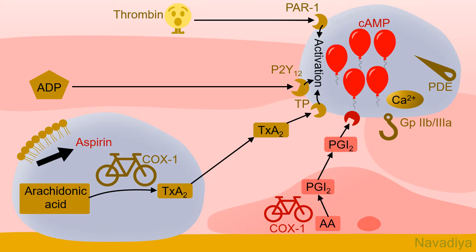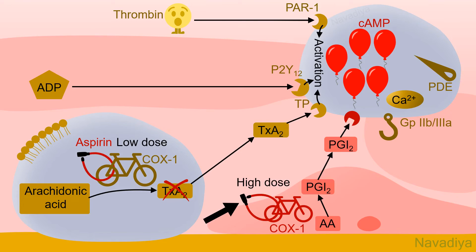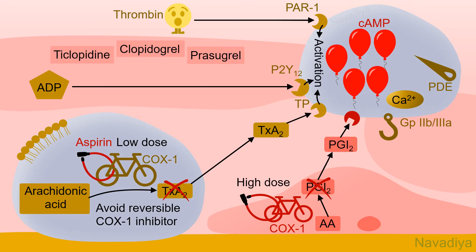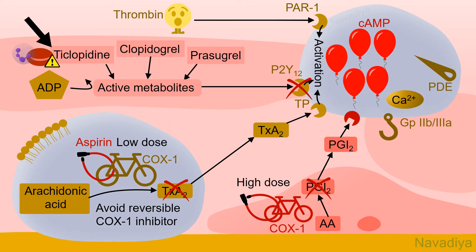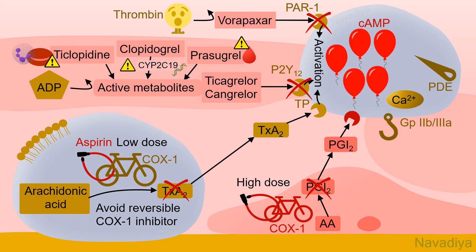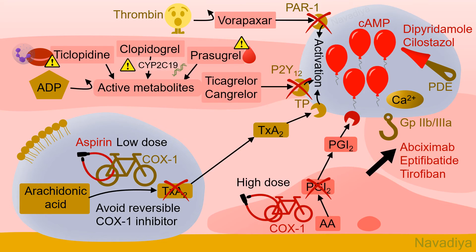Quick revision: Aspirin inhibits cyclooxygenase 1 and reduces synthesis of thromboxane A2. It should be used at low dose because high dose also inhibits cyclooxygenase in endothelium, reducing PGI2 synthesis. It should be avoided with reversible COX-1 inhibitors. Ticlopidine, clopidogrel, and prasugrel are pro-drugs whose active metabolites inhibit P2Y12. Ticlopidine causes severe hematologic adverse events. Clopidogrel has issues with CYP2C19 activation due to genetic polymorphism. Prasugrel has a high risk of bleeding. Ticagrelor and cangrelor are active by themselves and inhibit P2Y12 reversibly. For protease activated receptor we have vorapaxar. Dipyridamole and cilostazol inhibit phosphodiesterase and keep cAMP levels high. Abciximab, eptifibatide, and tirofiban inhibit GP2B3A.